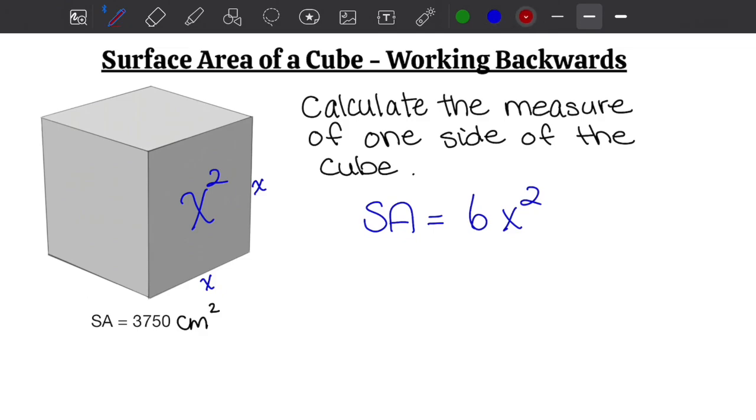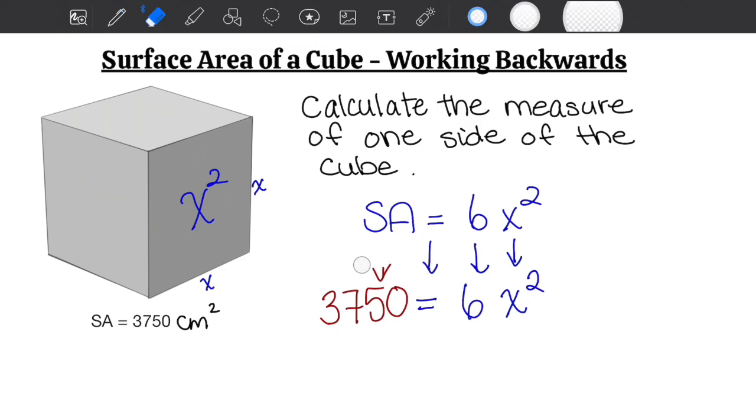Let me write what I know first. I know that the surface area is equal to 3750 square centimeters. The equals sign stays where it is, the six stays where it is, and I don't know what x is - this is what I'm looking for. So the equation I'm working with is 3750 equals 6x², and I'm trying to isolate or get x to be on its own.